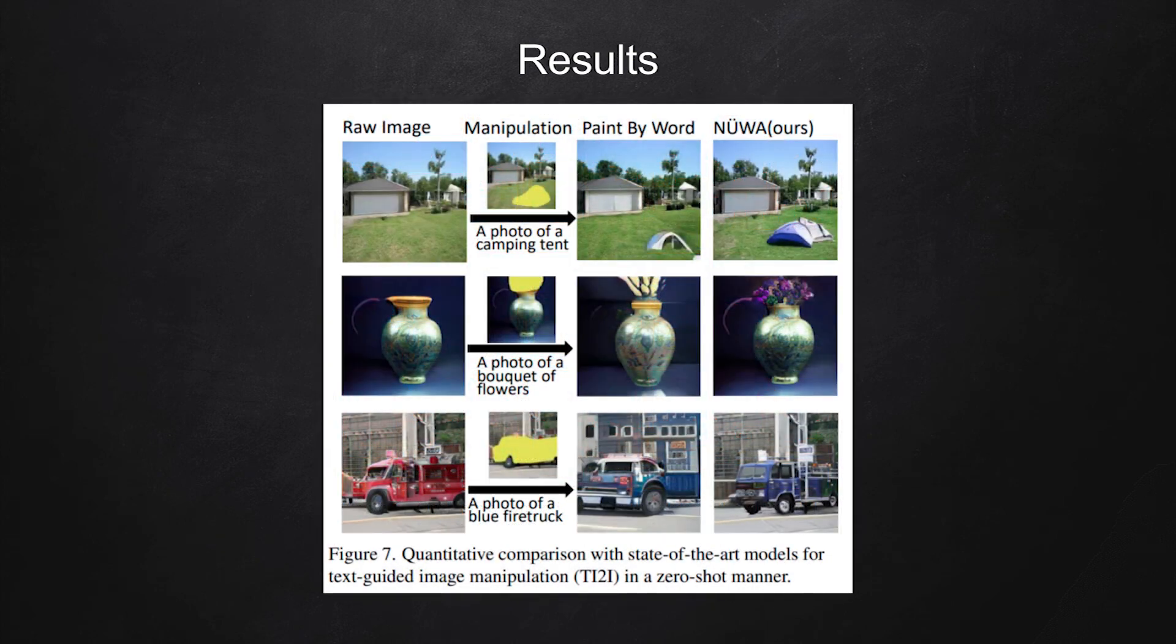Some more results in the image manipulation task. I think this result is very interesting. The model takes a raw image, and it also takes as input a sequence of text describing what it wants to do to the original image.